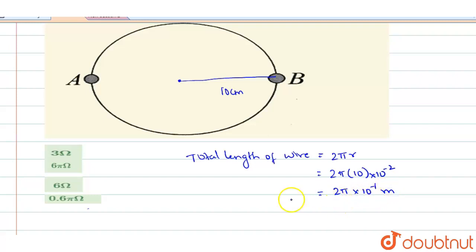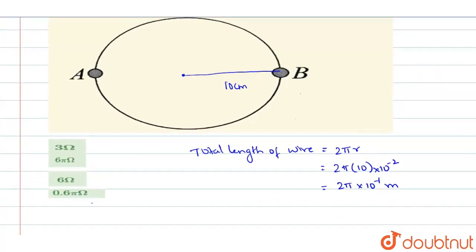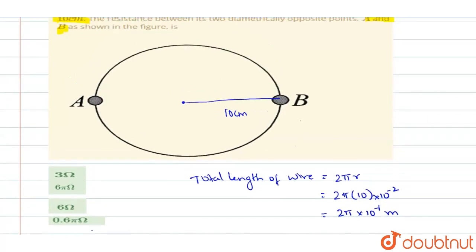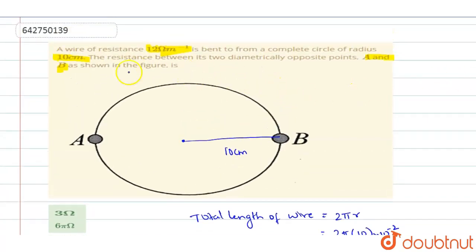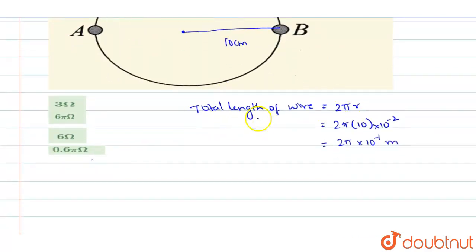And this will be the total length of the wire in metres. So so many metres you have the total length. Now in this length what is the resistance you have to calculate. So if this is the total length of the wire. See here. If this resistance is 10 cent radius is 10 centimetre. The total resistance across this wire will be the total resistance of the wire.